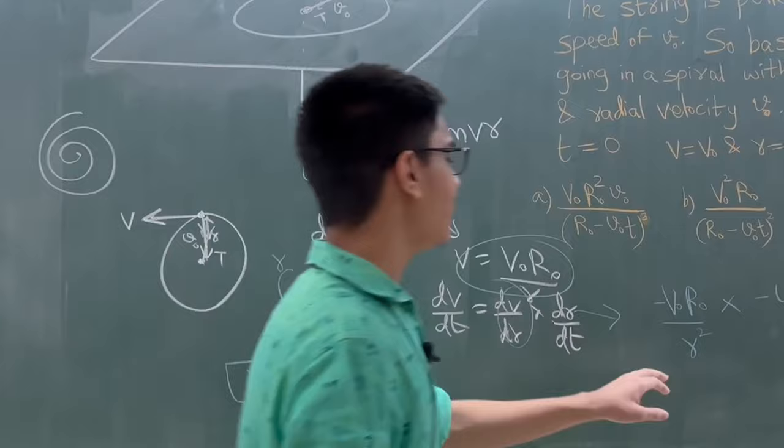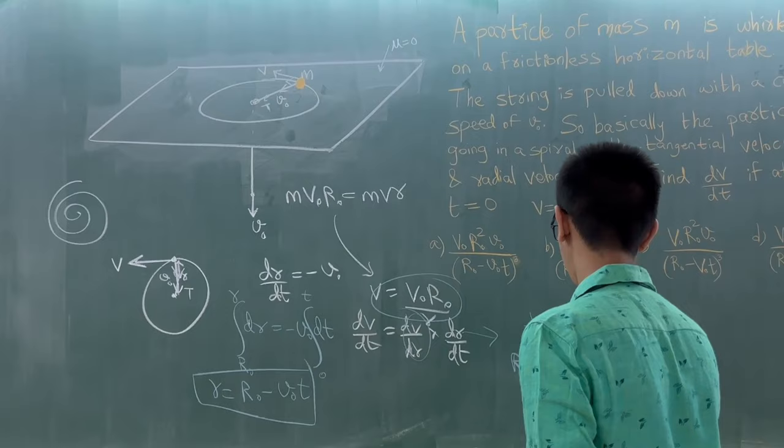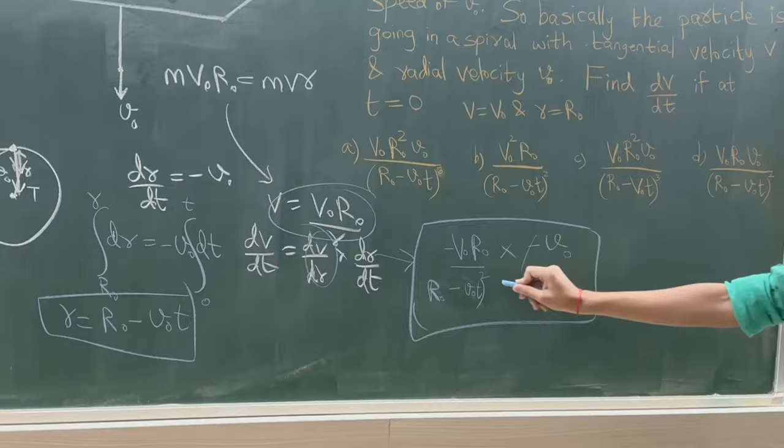If we add this here, then this will happen: r₀ minus u₀·t. Which option is matching this? Minus minus cut, v₀·r₀·u₀ over (r₀ minus u₀·t)², option D.